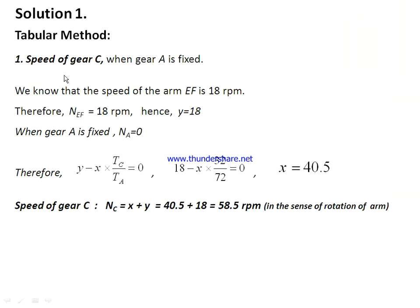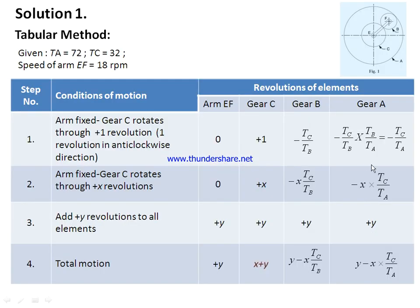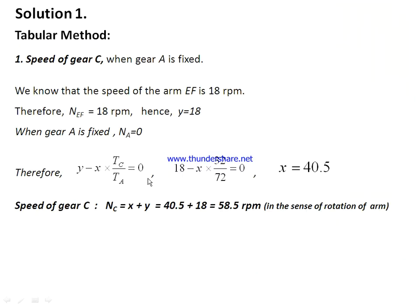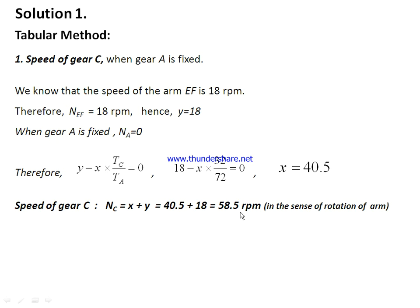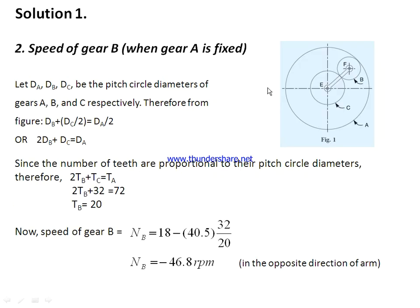Now we find the speed of gear C when gear A is fixed. We know the arm speed is 18 rpm, so y equals 18. When gear A is fixed, Na equals 0, so the equation y minus x times Tc/Ta equals 0 gives x equal to 40.5. Hence the speed of gear C is x plus y equals 40.5 plus 18 equals 58.5 rpm in the sense of rotation of the arm.